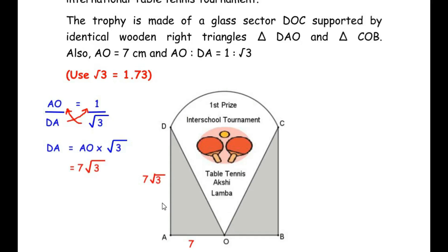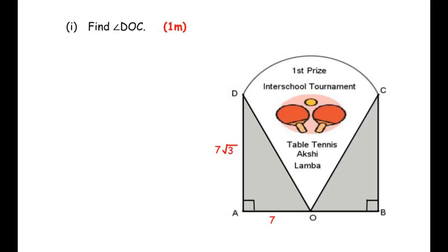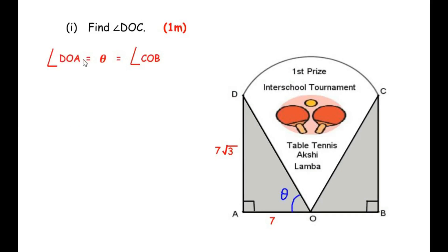Now, once we have the value of side DA, let us proceed to the first sub-question: find the angle DOC. We proceed by considering angle DOA as angle theta. Since both triangles are identical, angle DOA = angle COB = theta.